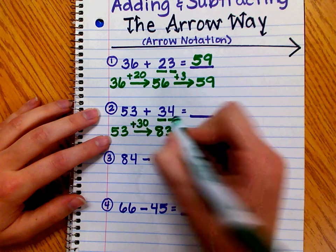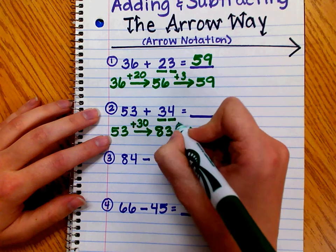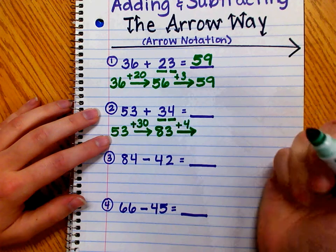Now, we have to add the ones. We have 83, draw another arrow, plus 4 because we have to add the 4 ones.